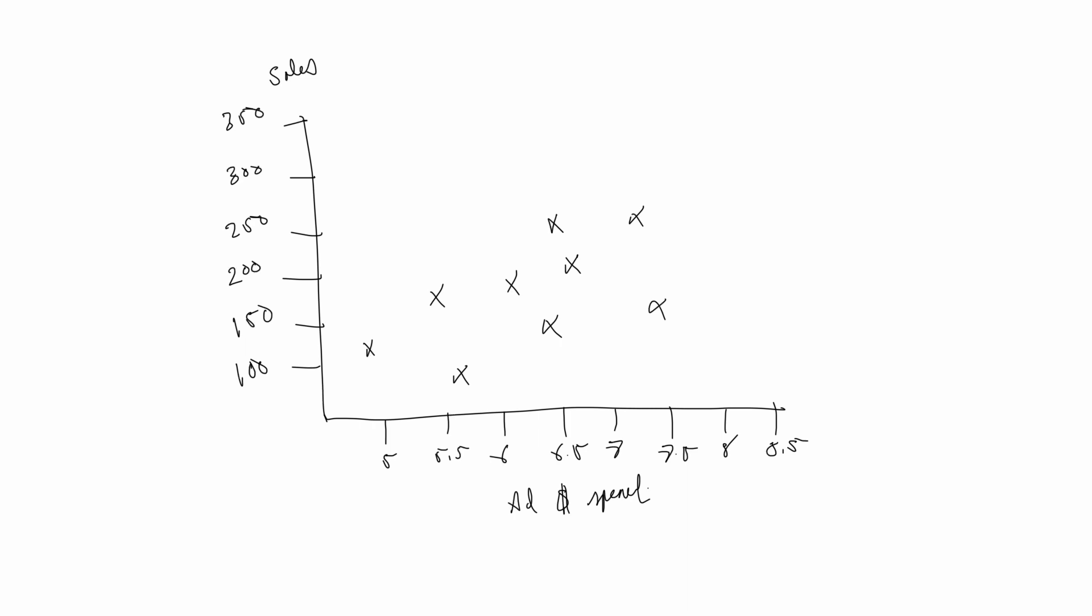What the regression algorithm does is it tries to find a line of best fit based on this data in order to predict future values for ad spend that you don't have data for. So if we're looking to make a prediction using a regression algorithm,